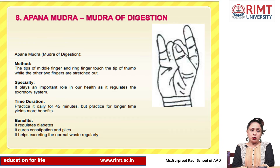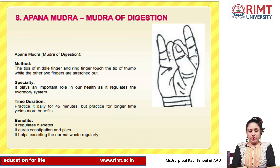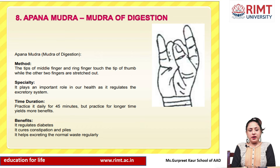Next is Apana Mudra, also called the Mudra of Digestion. Method: the tip of the middle finger and ring finger touch the tip of the thumb while the other two fingers are stretched out. Specialty: it plays an important role in our health as it regulates the excretory system. Time duration: practice it daily for 45 minutes, but practicing for longer yields more benefits. Benefits: it regulates diabetes, cures constipation and piles, and helps in excreting normal waste regularly.